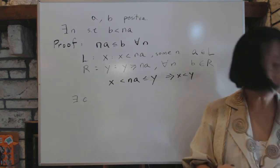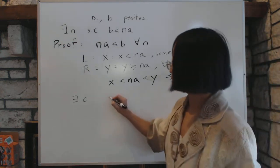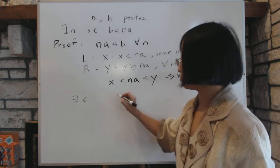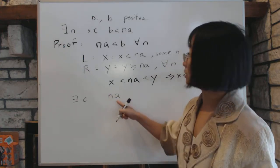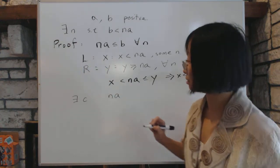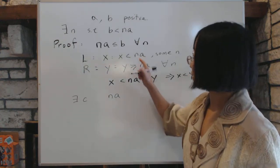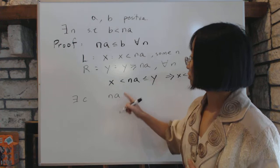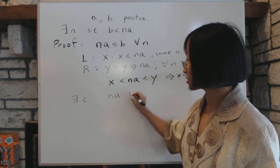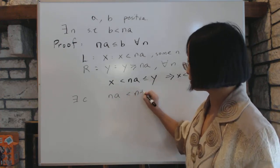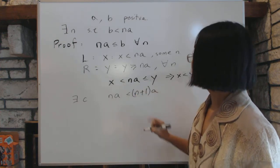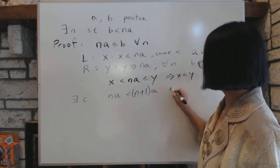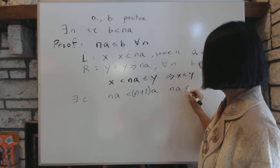And then we observe this. Let's consider the number NA for some N, doesn't matter. Where does NA belong? Does it belong to L or does it belong to R? Well, NA is going to be less than something called N plus 1A. And therefore NA belongs to L. It's in L. Because N plus 1A is just a natural number. And so it's N plus 1A.